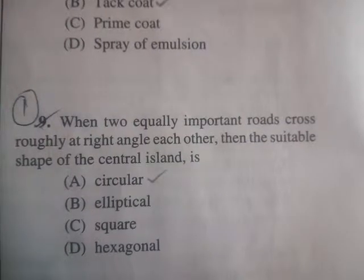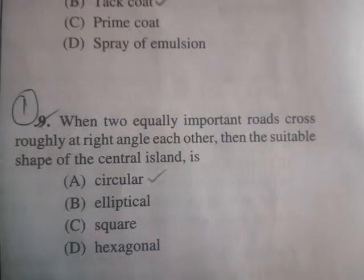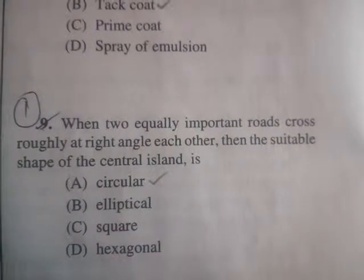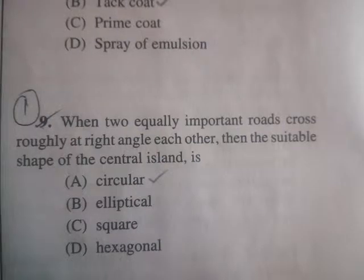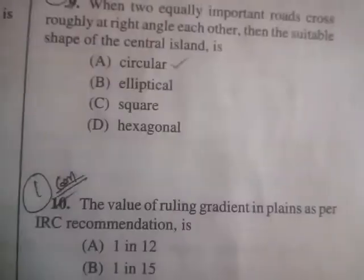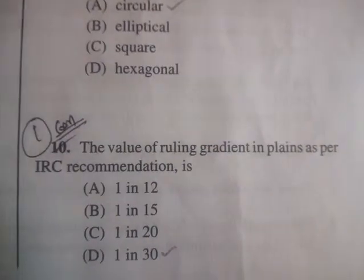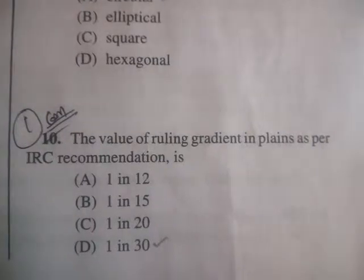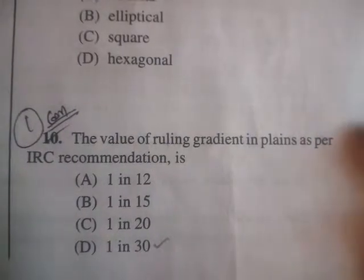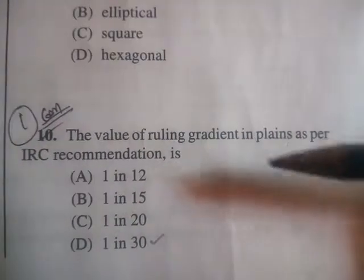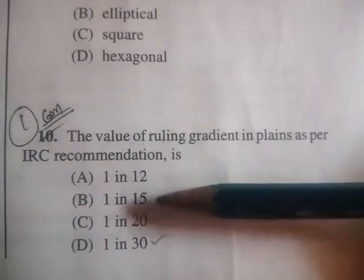Next question: when two equally important roads cross roughly at right angles to each other, the suitable shape of the central island is — circular, elliptical, square, or hexagonal? The correct answer is A: circular.